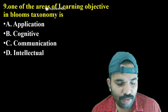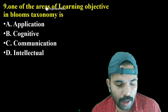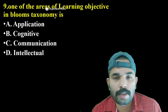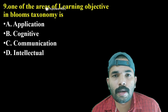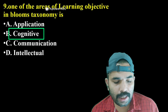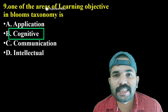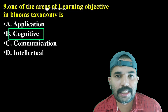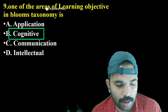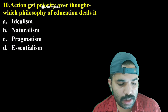Next question: One of the areas of learning objectives in Bloom's Taxonomy is — Application, Cognitive, Communication, or Intellectual? The correct answer is Cognitive. Bloom's Taxonomy has three domains: Cognitive, Psychomotor, and Affective.